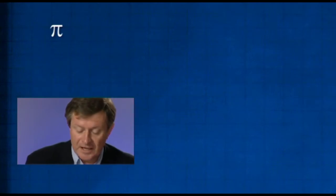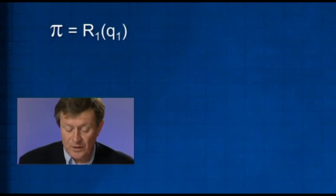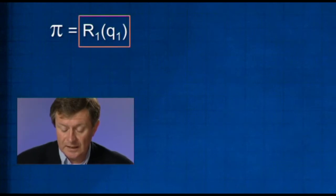We're going to take a look at the price discrimination result with the aid of some mathematics now. Mathematically, the firm is assumed to have profits made up of revenue from the first market, let's call that R1.